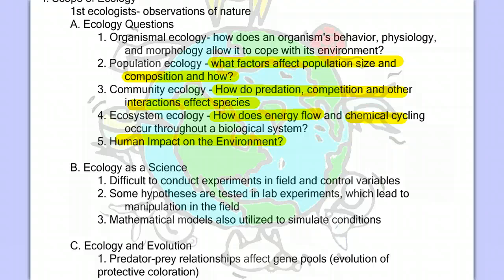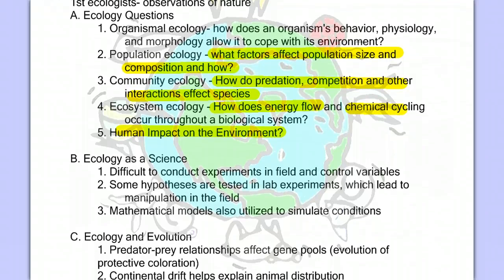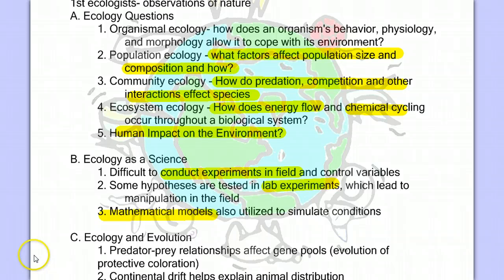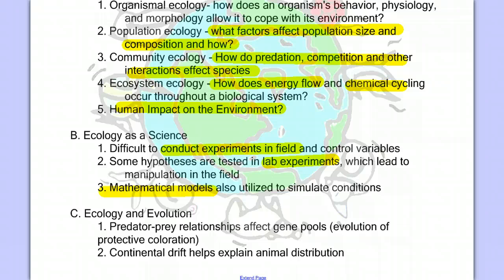As we try to answer these questions, we find that we have to employ special techniques to conduct tests in the field and that it's difficult to control for variables. So often, initial field tests will lead to more controlled investigations in the lab, which in turn lead to manipulations in the field. We also find that mathematical models are useful to simulate conditions, which allow us to make predictions. Our study of ecology also helps us understand some of the concepts of evolution by looking at interactions between species and their environments.